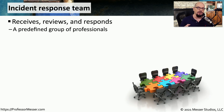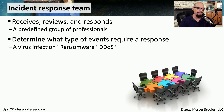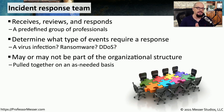Inside our organization, we need a group of professionals trained to respond to security incidents — this is our incident response team. They first determine what type of incident is occurring and what type of response it needs. For example, a virus infection has a certain set of responses that may involve a small group of people, but something like ransomware or a distributed denial-of-service attack may involve a larger group. The incident response team may not be a separate department, but instead a committee of people that come together when an incident occurs.